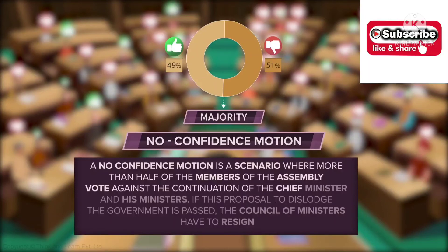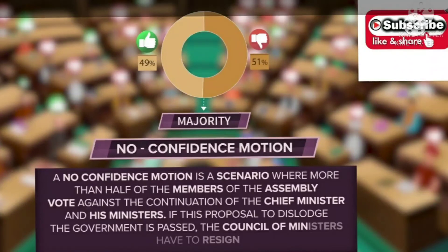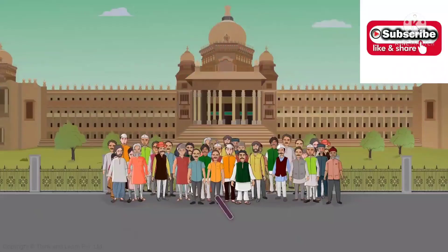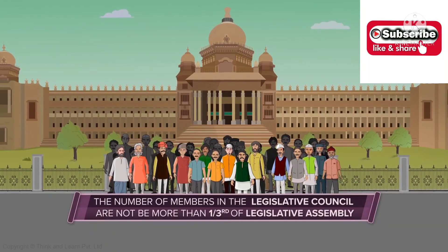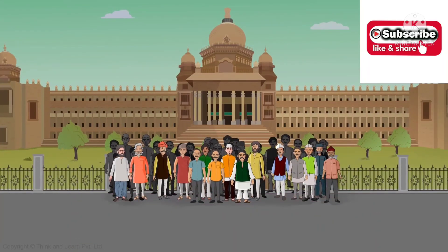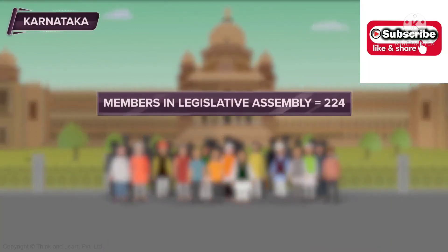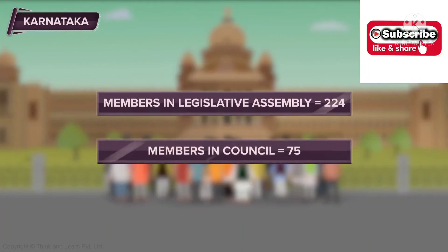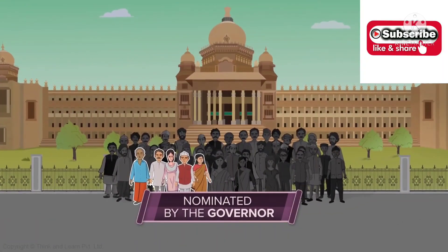The members of the Legislative Assembly also have the right to vote during elections of the President. The membership of the Legislative Council is not more than one-third of the membership of the Legislative Assembly. Since the Legislative Assembly of Karnataka has 224 members, the Legislative Council has 75 members. A few members are nominated by the Governor; others are elected by members of the Legislative Assembly, local bodies, registered graduates, and teachers. MLCs are elected for a term of six years and should not be less than 30 years of age.